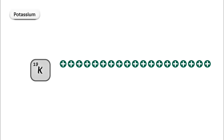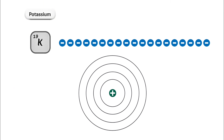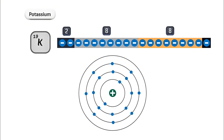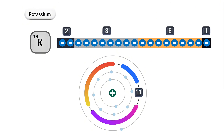Now take potassium, which has 19 protons and 19 electrons. Its electron configuration is: first shell 2 electrons, second shell 8, third shell 8, and fourth shell 1 electron. But here is one confusion — since the third shell can hold up to 18 electrons, why does it have only 8 instead of 9? To understand this, we need to look into subshells, which are introduced by the quantum model.